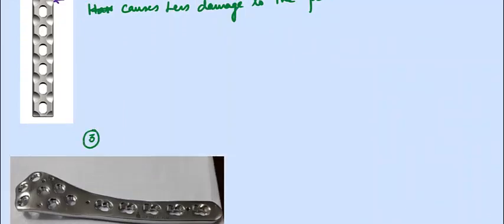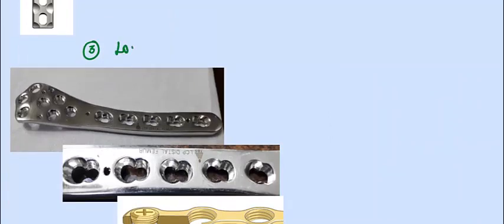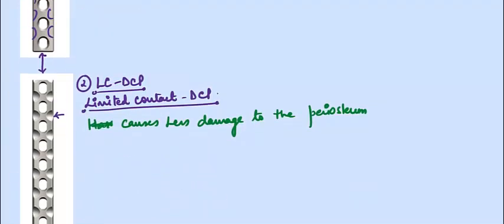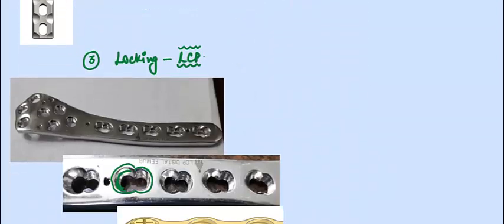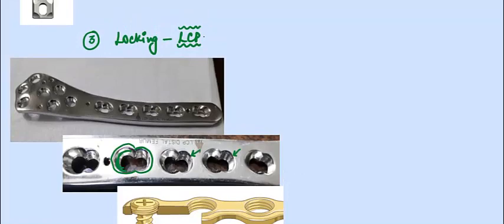There is another modification: plate number three, which is called a locking plate or locking compression plate. The hole of this plate has a figure-of-eight design. The upper part of the hole is smooth, like other compression plates, so we can fix a compressive screw there. But the lower half of the hole has threads in it. When you pass the screw — which also has threads in its head — the screw head gets fixed to the plate rather than to the bone.